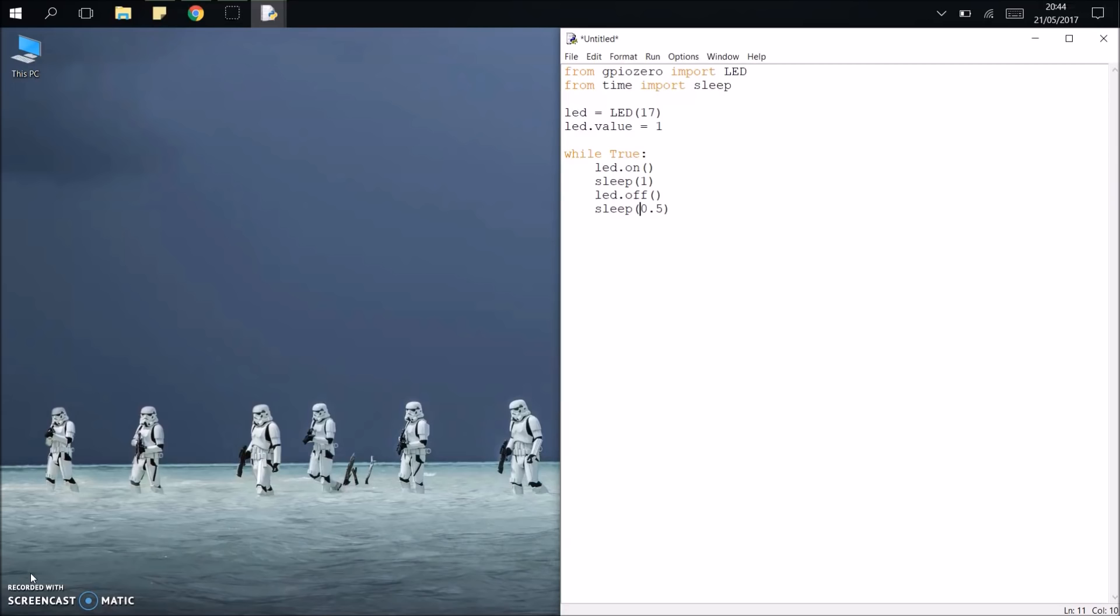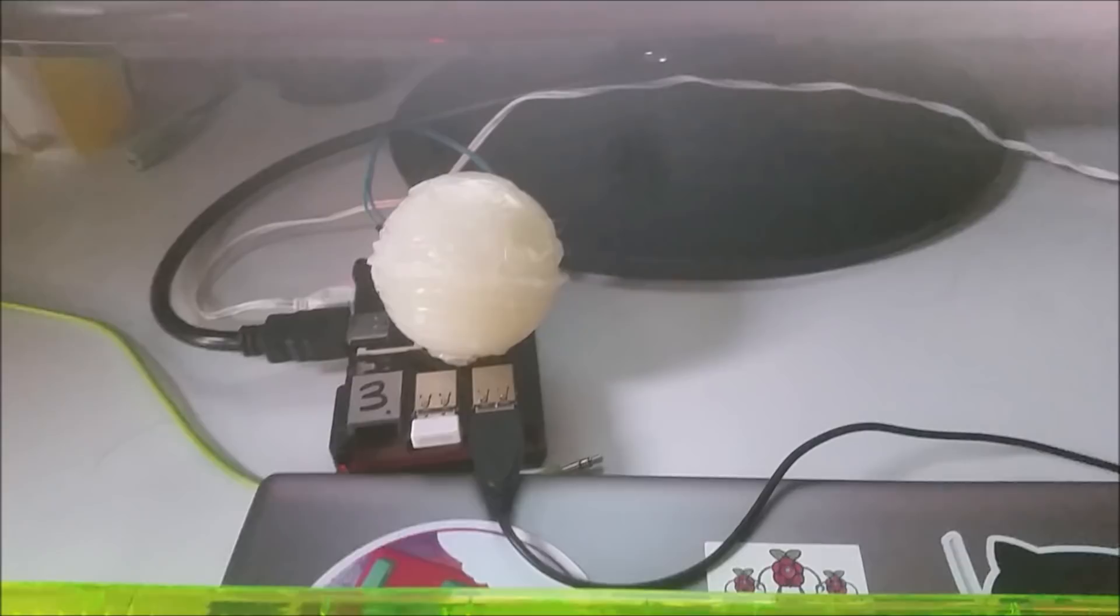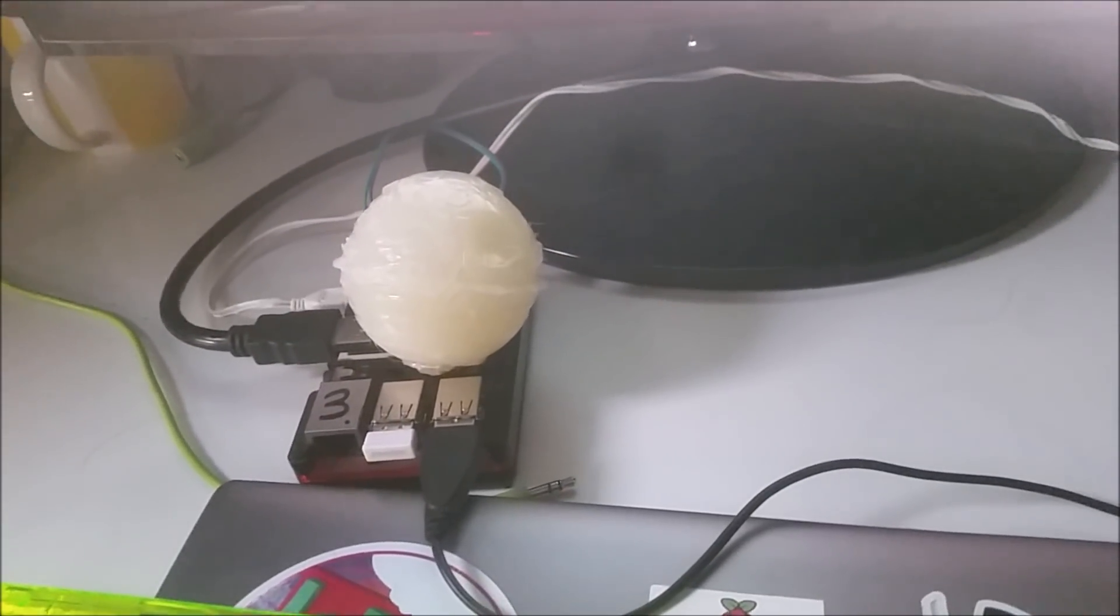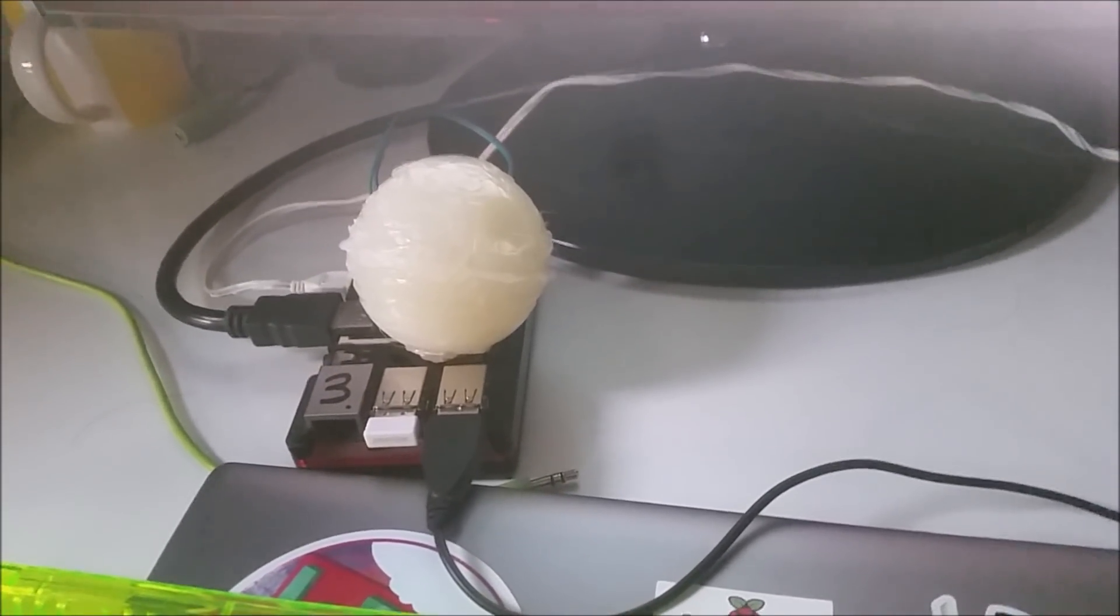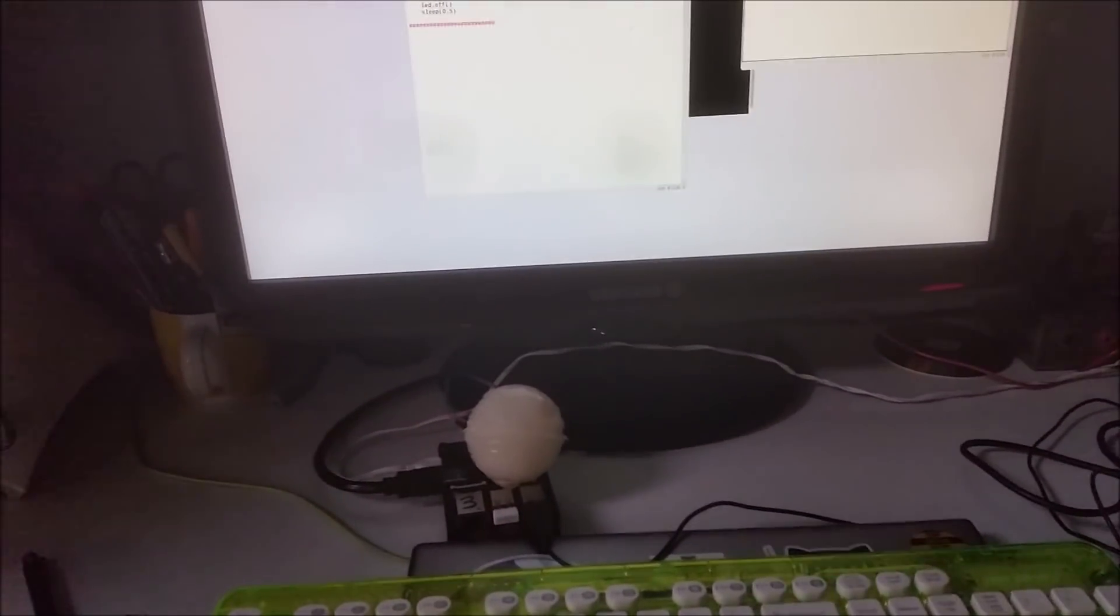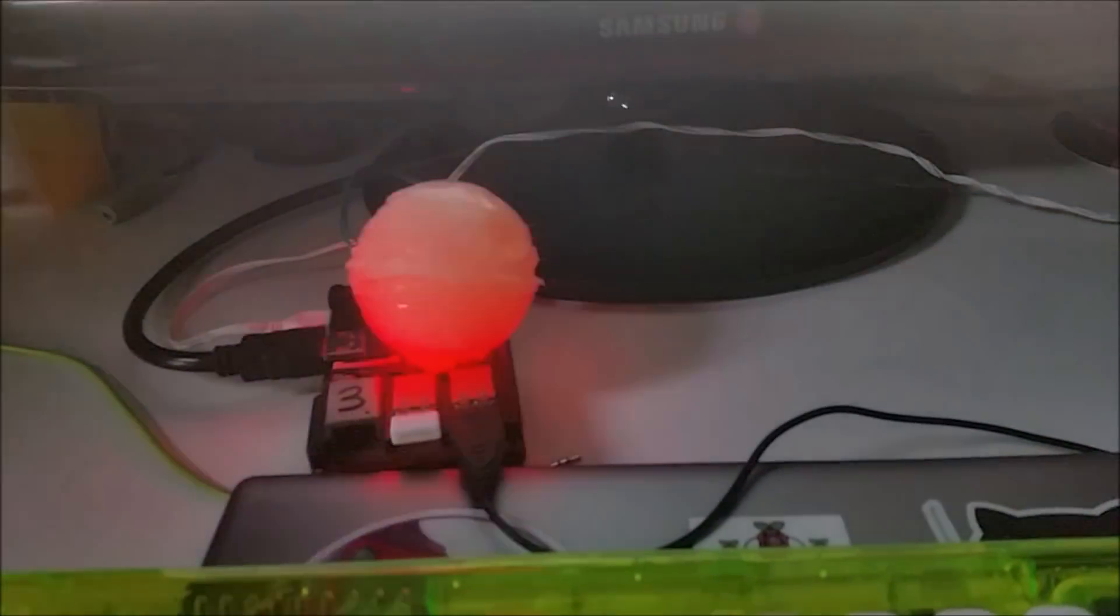Okay, so all you need to do now is save the code and head over to the Raspberry Pi, and we can get this running. Let's have a look. Here is the blue Death Star - I don't know what Lord Vader thinks of this. I'm just going to give the code a run now. You can see it here on screen on the Raspberry Pi. And press F5 on the keyboard, and hopefully we'll start getting some glowing LED Death Star action.